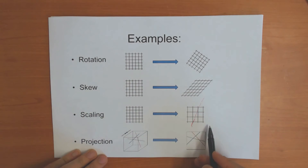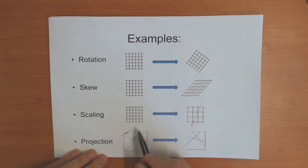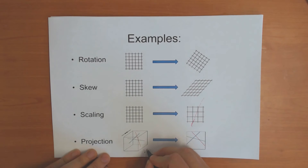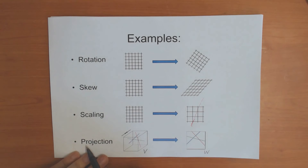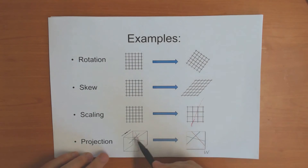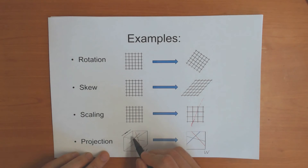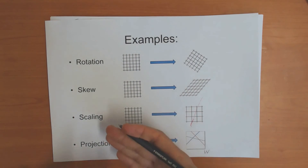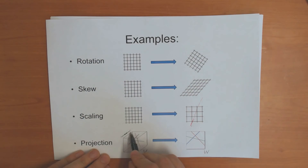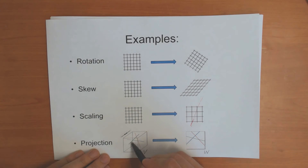The fourth example is a linear transformation where the dimensions are different. Here the space V is three-dimensional and the space W is two-dimensional. This is called a projection, which means you squash one of the dimensions. There are three lines — red, green, and blue — in the three-dimensional space, and you squash the third axis by flattening everything along it to get a two-dimensional space. Straight lines here are still preserved as straight lines, so this is another example of a linear transformation.